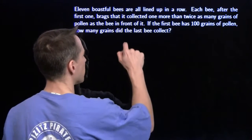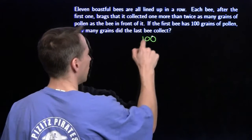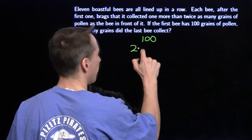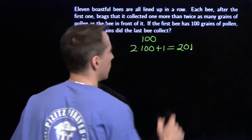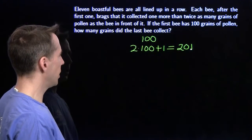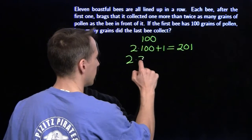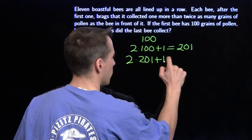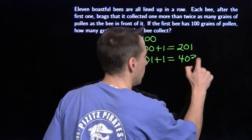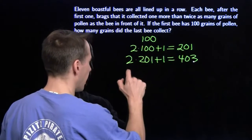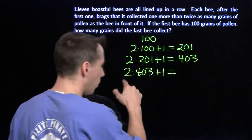The first bee has 100. That means the second bee has one more than double that, so we double it and add one — that gives us 201. The next bee is going to have double that plus one: two times 201 is 402, add one is 403. We can keep going like this — double 403, that's 806 plus one is 807. We could get the answer this way by doing a whole lot of arithmetic.